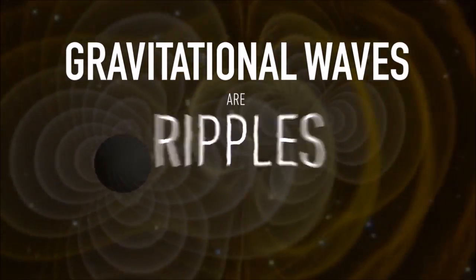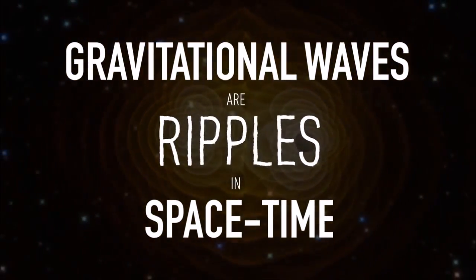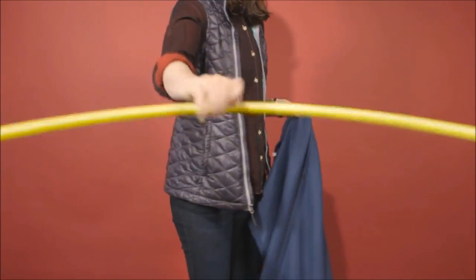Gravitational waves are considered ripples in spacetime. What is spacetime? Let's try to visualize it by imagining it as this blanket. Yes, we're compressing four dimensions into three.